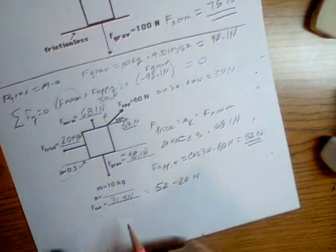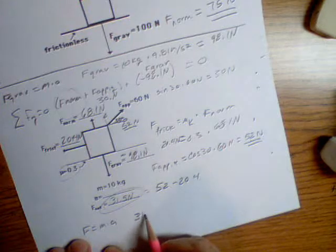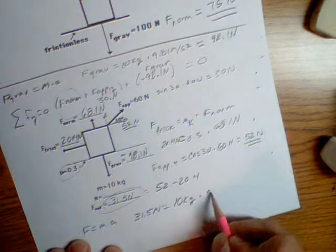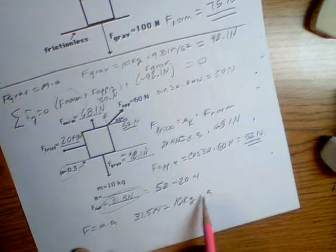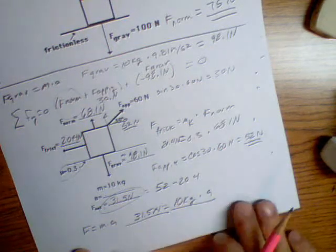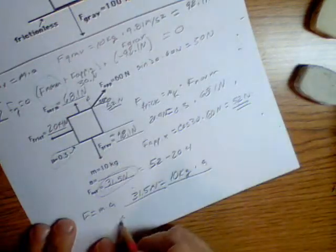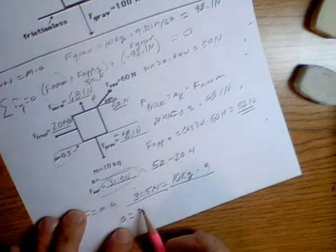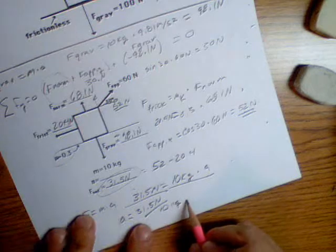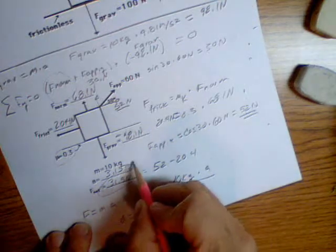Now, acceleration is simple enough. Force equals mass times acceleration, and we have our net force of 31.5 newtons equals 10 kilograms times acceleration. All we have to do is divide both sides by 10 to get acceleration by itself. Acceleration equals 31.5 divided by 10 kilograms, and that's just moving the decimal — it's going to be 3.15 meters per second squared.